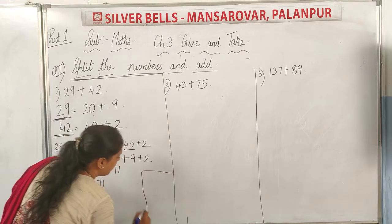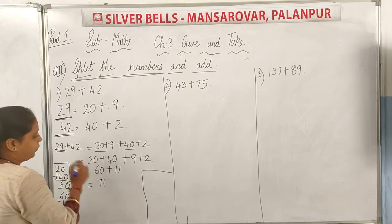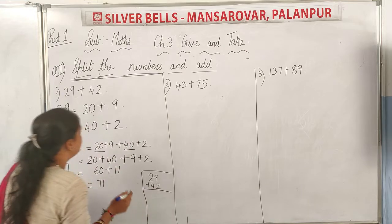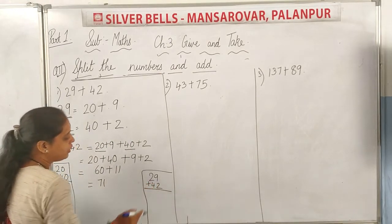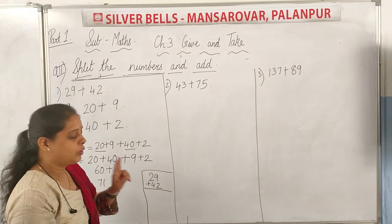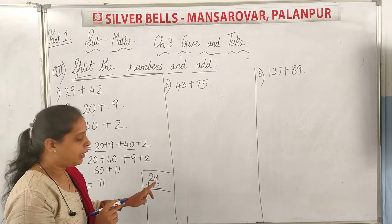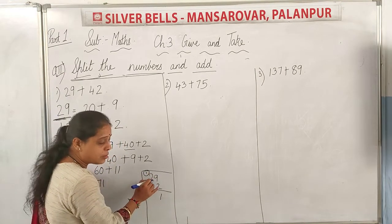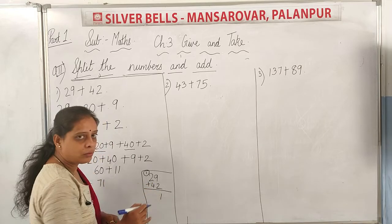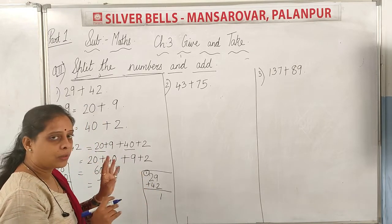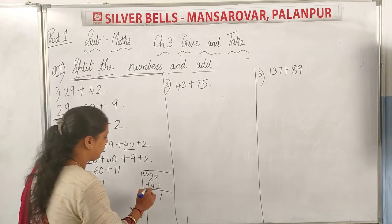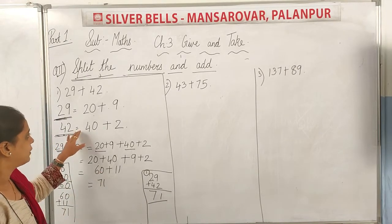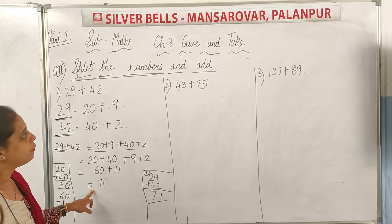But if you want to check whether your answer is right or wrong, we will add 29 plus 42 directly. Add 9 plus 2 — get 2 fingers, start counting after 9: 10, 11. So write 1 and carry 1. Then 1 plus 2 is 3, and 3 plus 4 — hold 4 fingers and count after 3: 4, 5, 6, 7. So here also we get 71.